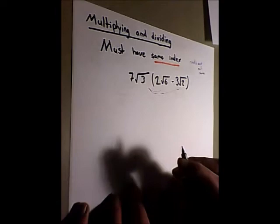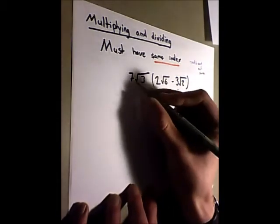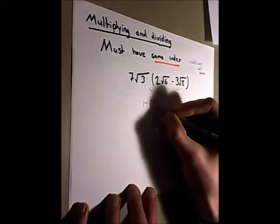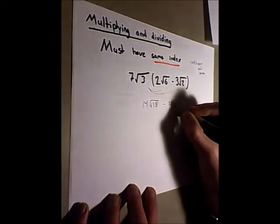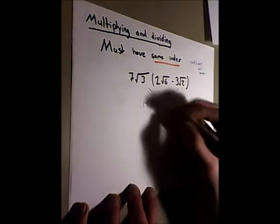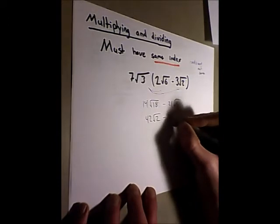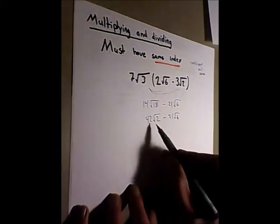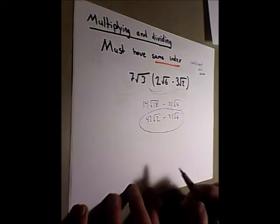We FOIL this in and we find that we get 7 times 2 is 14, 3 times 6 is 18, minus 7 times 3 is 21, and 3 times 2 is 6. And then we simplify these and we have 42 root 2 minus 21 root 6. We can't simplify these anymore and we can't add or subtract these together to make it even more simple. So this is our expression in lowest form after multiplying.